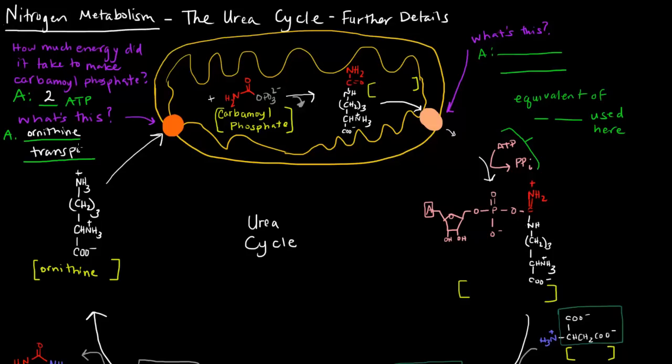Once that transporter gets ornithine into the mitochondrial matrix, it joins with carbamoyl phosphate, and then a phosphate group hops off. This molecule here is created. This molecule is called citrulline. Citrulline basically just has the carbamoyl portion of carbamoyl phosphate tacked onto ornithine at this amino group here.